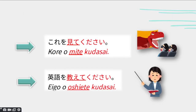Let's look at a few more examples. Please watch this — Kore wo mite kudasai. The verb is miru, to watch. In the te form it becomes mite, and you add kudasai to make it a request. Please teach English — eigo wo oshiete kudasai. Oshieru means to teach; in the te form it becomes oshiete, and you add kudasai.